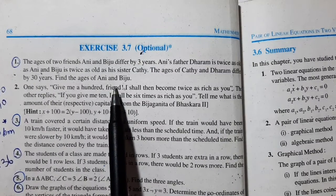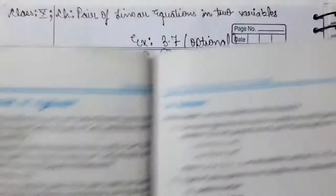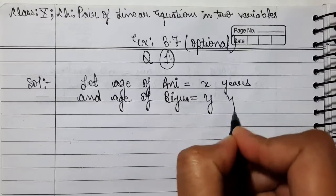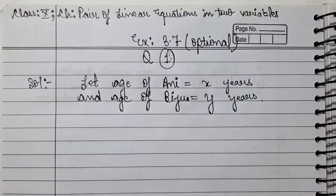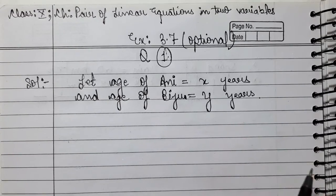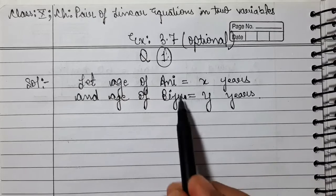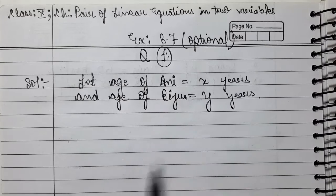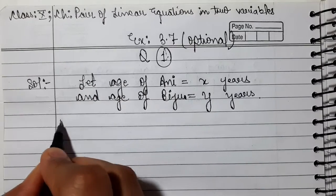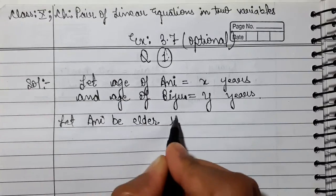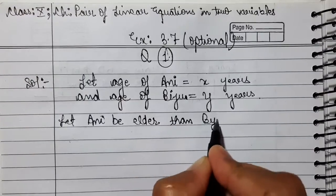First of all, let the age of Annie be X years and the age of Biju be Y years. We need to find that the ages of two friends Annie and Biju differ by 3 years. But we don't know who is bigger or who is elder. Annie and Biju are friends, so one will be big and one will be small, then their age difference is 3 years. Let us find out — let Annie be elder than Biju.